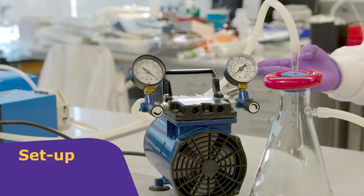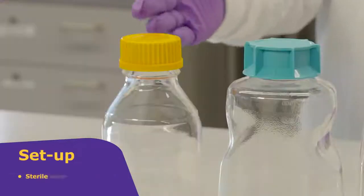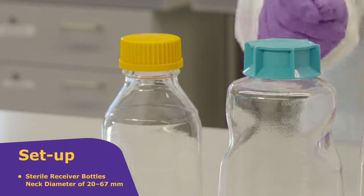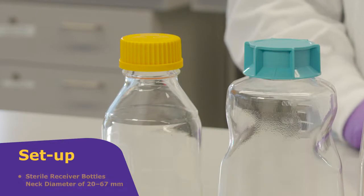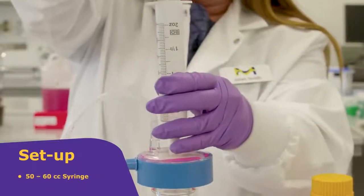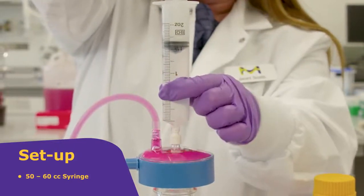Setup: You will need a regulated vacuum source with tubing, sterile receiver bottles or vessels with an inner neck diameter of 20 to 67 millimeters, and a 50 to 60 cc syringe that can be used to reprime in the event of air locking.